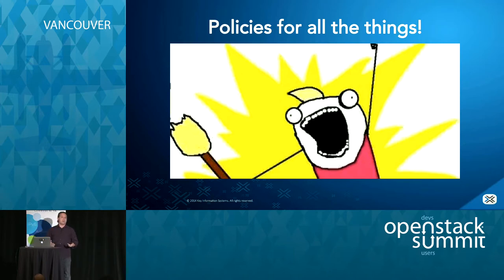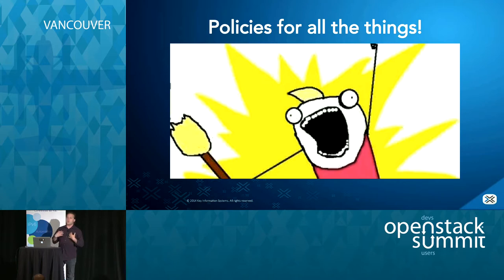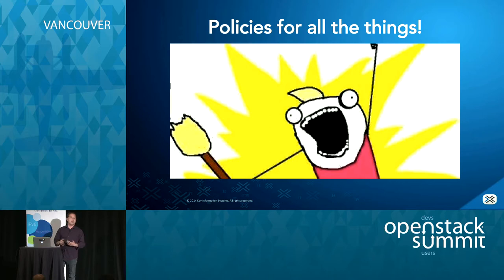If you build the policy within OpenStack in a way that's supported within the framework and push that policy out, you're not locked into any particular vendor or solution — you're opening yourself up to additional freedoms by doing it on a policy basis. We have a mixed environment: IBM Power Systems, VMware, and we're rolling out KVM. Policies are really the only good way to manage that; otherwise we're managing lots of individual siloed environments, which is impossible at any kind of scale.